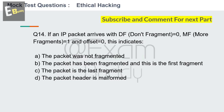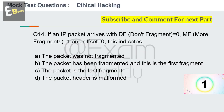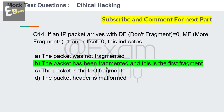Question 14: If an IP packet arrives with DF (don't fragment) = 0, MF (more fragments) = 1, and offset = 0, this indicates? Options: the packet was not fragmented, the packet has been fragmented and this is the first fragment, the packet is the last fragment, the packet header is malformed. Your time starts now. The answer is B: the packet has been fragmented and this is the first fragment. Now question number 15.